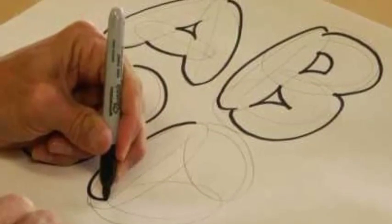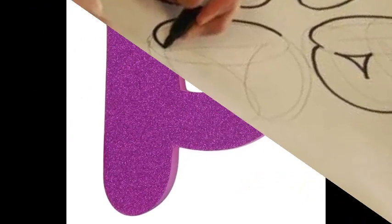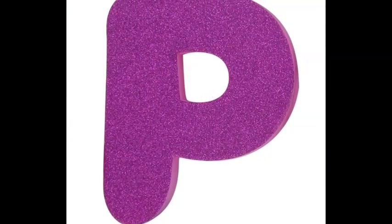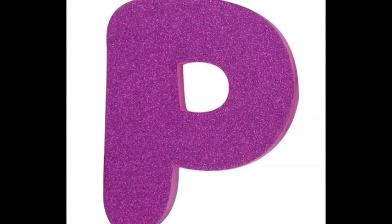Make the outline the same distance from the actual letter, all the way around the shape of the letter. Keep making outlines until your bubble letter is as big as you want it to be.